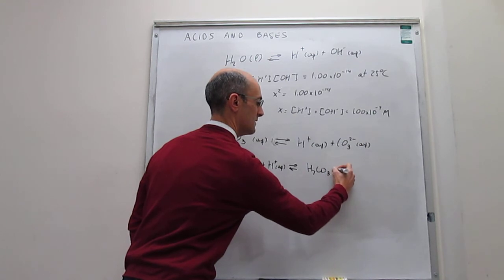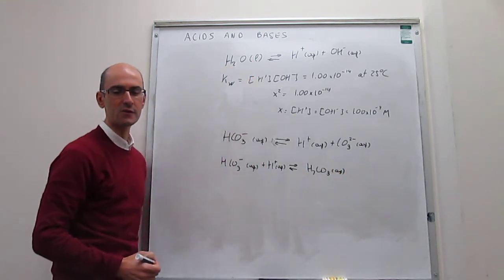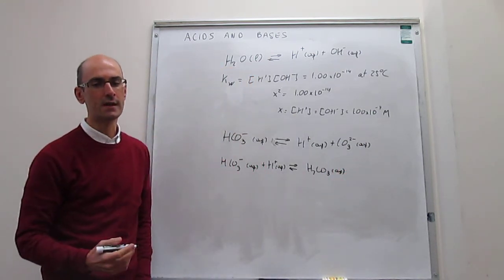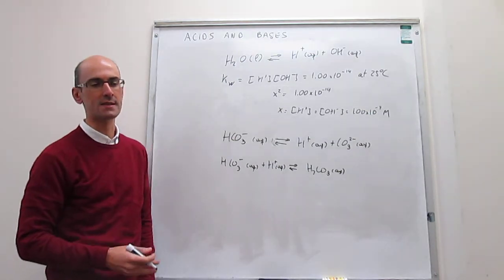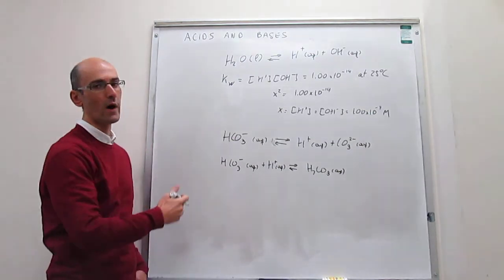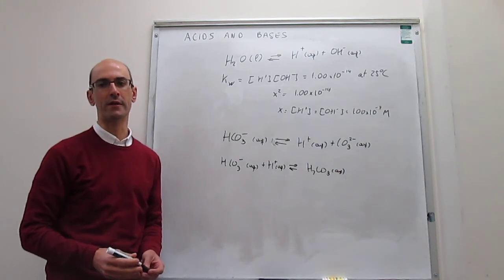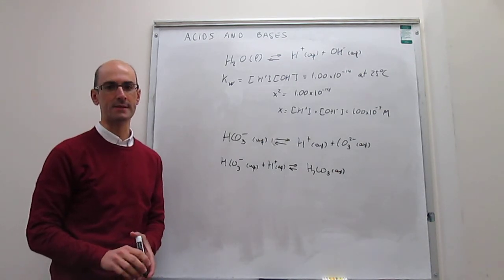So towards the end of this chapter, in just a few videos, we will see how to treat the acid-base processes of amphoteric substances like hydrogen carbonate. Again, water is the textbook exemplar for what an amphoteric substance is.